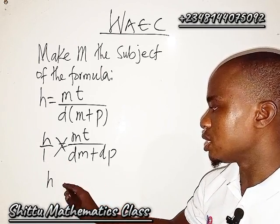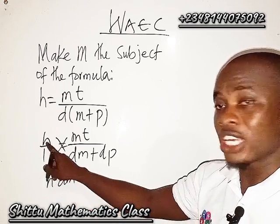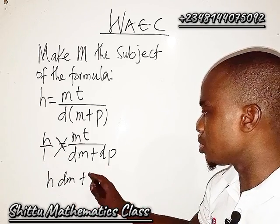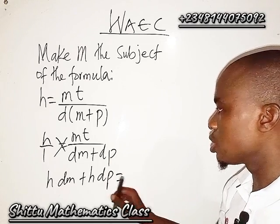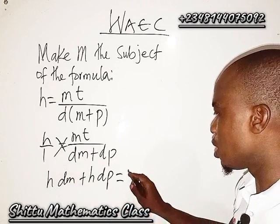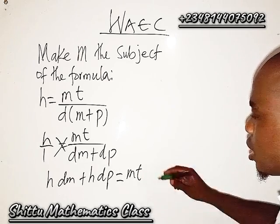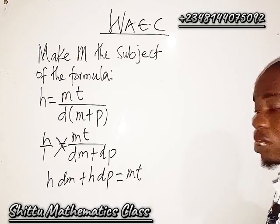If you are multiplying h by everything here, we're going to be having h·dm, then h times this we're going to be having h·dp. Then equals, so here 1 times mt, we have mt.